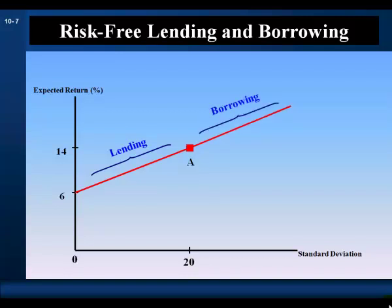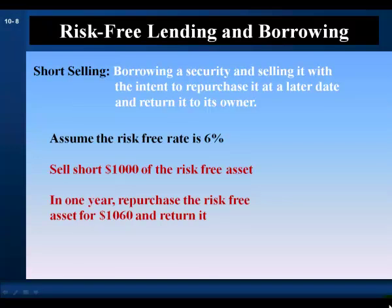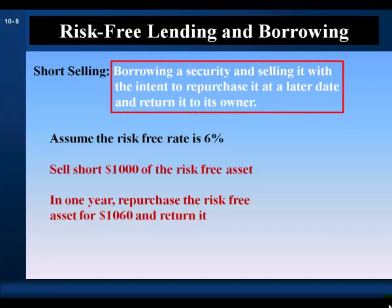Now suppose we wanted to extend our risk and return opportunities beyond the point defined by portfolio A. We can do that by borrowing at the risk-free rate and increasing our investment in the risky asset using the proceeds from the loan. This would increase our expected return but also increase our risk. We can borrow at the risk-free rate through a transaction called short-selling. Short-selling is borrowing a security and selling it with the intent to repurchase it at a later date and return it to its owner.